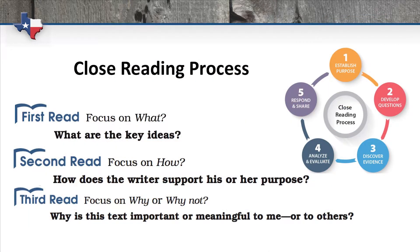Each of the three close reads is used to work on a different TEKS-based skill and typically goes from the what — the surface level meaning of the text — to the how — the author's craft — and finally to the why — the deeper meaning of the text or the author's purpose.